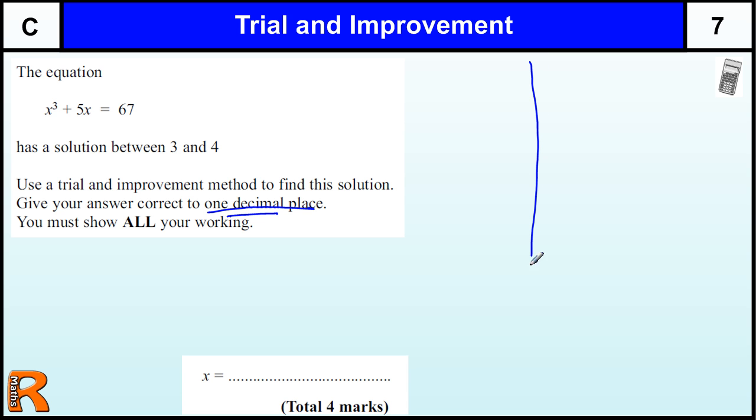You need to draw yourself a little table. Here's your X value, here's the thing we're calculating, X cubed plus 5X. This is calculator based, and we should be saying whether it's too big or too small, and then using that to help us calculate the next value.